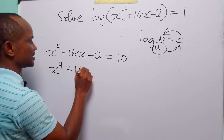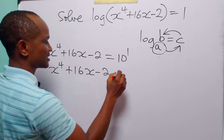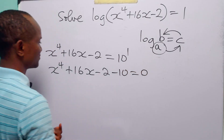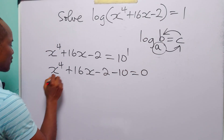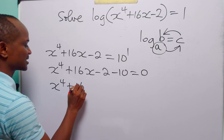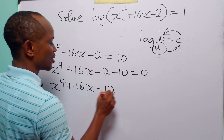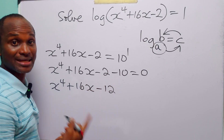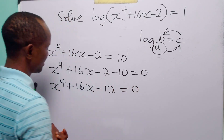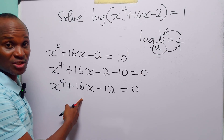Bringing 10 over to the left-hand side, we have minus 10 equal to 0, and so we have x to the power 4 plus 16x minus 2 minus 10 equal to 0, which simplifies to x to the power 4 plus 16x minus 12 equals 0. The easiest way to solve this quartic equation is by completing the squares.